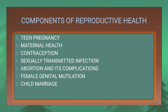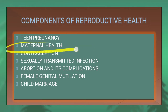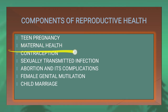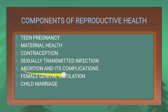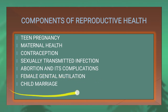Components of reproductive health include: teen pregnancy, maternal health, contraception, sexually transmitted infection, abortion and its complications, female genital mutilation, and child marriage.